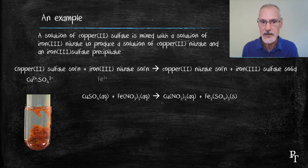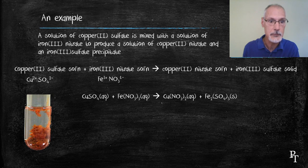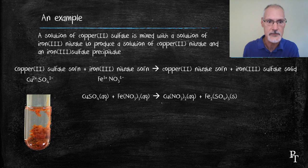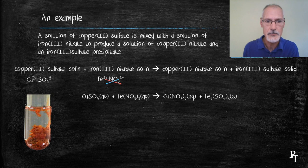In the case of iron 3 nitrate, iron possesses a 3 plus charge and nitrate a 1 minus charge. I require 3 nitrates to balance the charge of the iron ion. Some of you might recall this as the criss-cross rule, where we take the magnitude of the numbers and they become the coefficients or the subscripts that we use for each of the species.